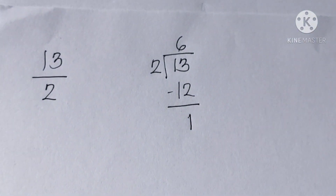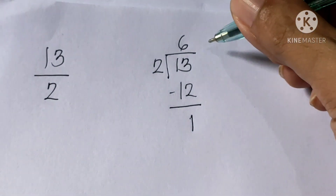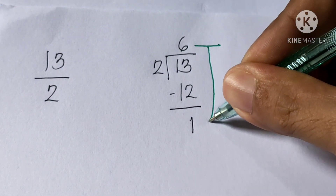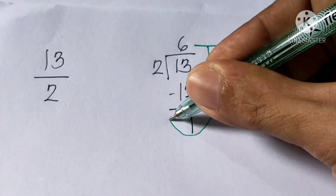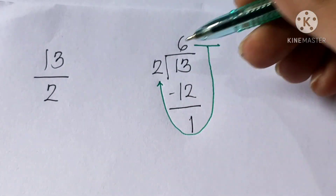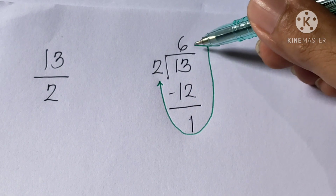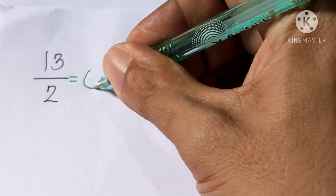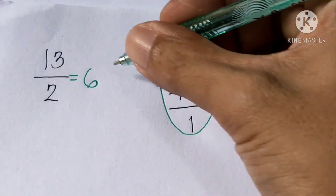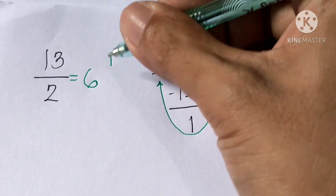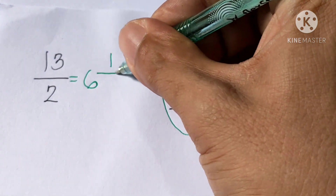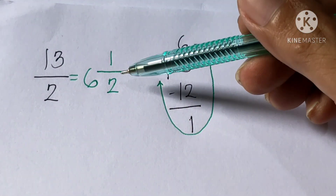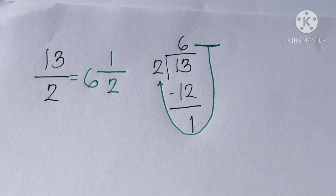Again, draw a capital letter J. Our first point is 6, so 6 is our whole number. Then go down to 1 — 1 will be the numerator. Then, next is 2, which will be the denominator. So, the answer is 6 and 1/2.